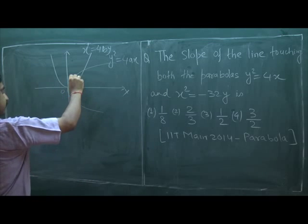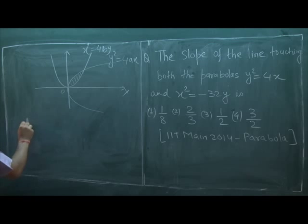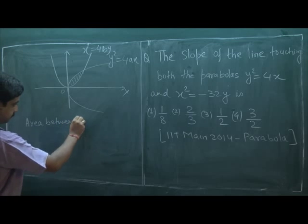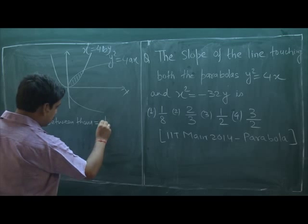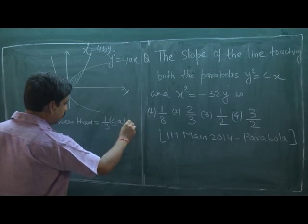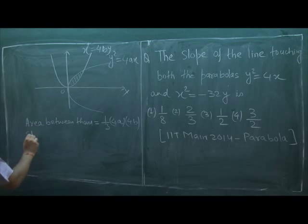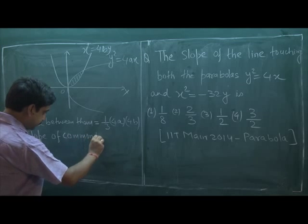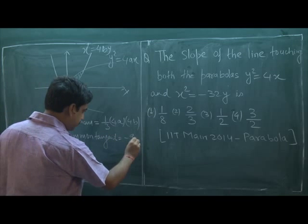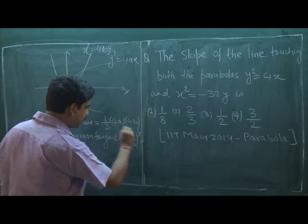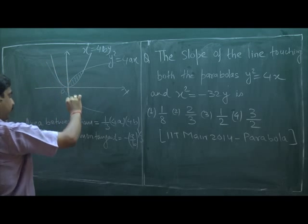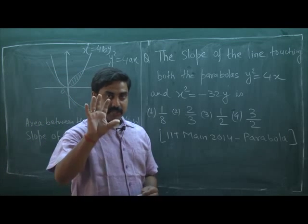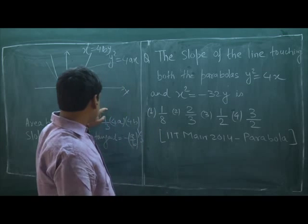The first point is the area between them, which is (1/3) × 4a × 4b. The second one is the slope of the common tangent, which is -(a/b)^(1/3). We can draw a common tangent and its slope is -(a/b)^(1/3). For such type of question, we must remember these two results.